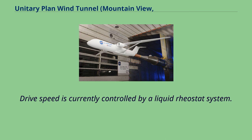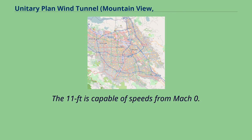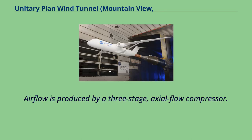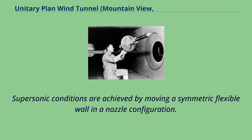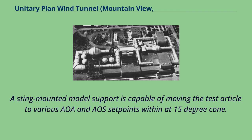Drive speed is currently controlled by a liquid rheostat system. The transonic wind tunnel is a closed return, variable density tunnel with a fixed test section geometry. The 11-foot tunnel is capable of speeds from Mach 0.25 to Mach 1.4. Airflow is produced by a three-stage axial flow compressor. Supersonic conditions are achieved by moving a symmetric flexible wall in a nozzle configuration. Typical models in the 11-foot tunnel are either a full-span or half-span configuration, with a sting-mounted model support capable of moving the test article to various angle-of-attack and sideslip set points within a 15-degree cone.